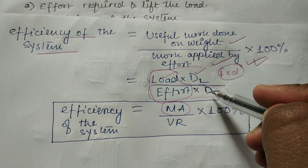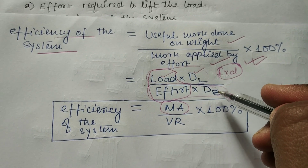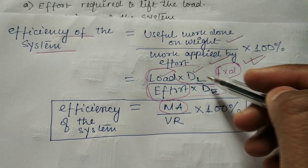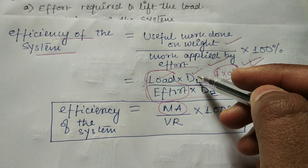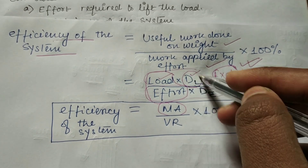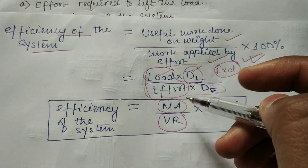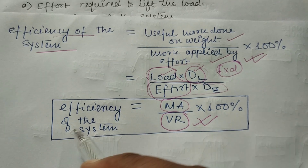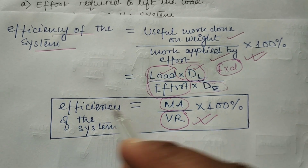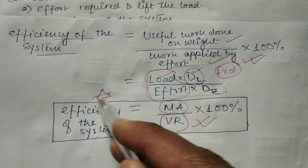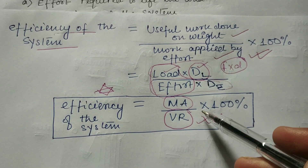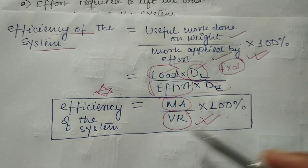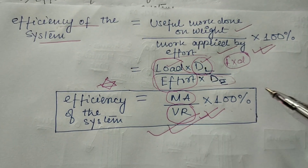So it equals mechanical advantage, and the distance traveled by the effort divided by the distance traveled by the load is the velocity ratio. This is how the formula is derived. The final important formula is: efficiency of the system equals mechanical advantage divided by velocity ratio, multiplied by 100.